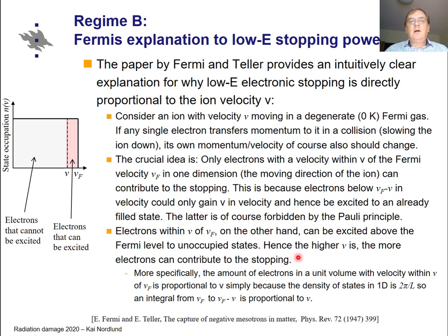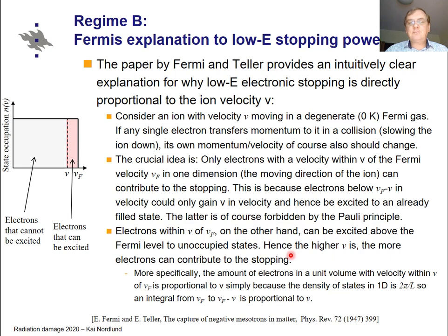But electrons within V of the Fermi velocity can be excited above the Fermi energy, where by definition all states are free in a degenerate Fermi gas. The area where electrons can be excited grows with velocity — the higher the velocity, the more electrons can contribute to the stopping. This gives a simple explanation for why the stopping power is proportional to velocity.